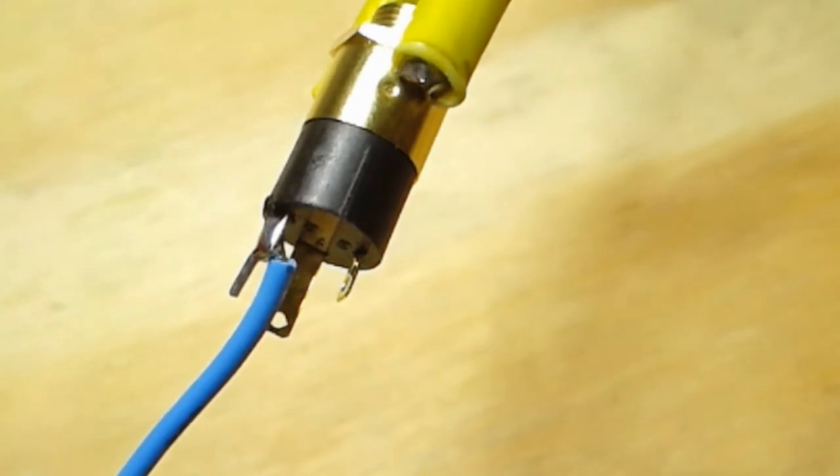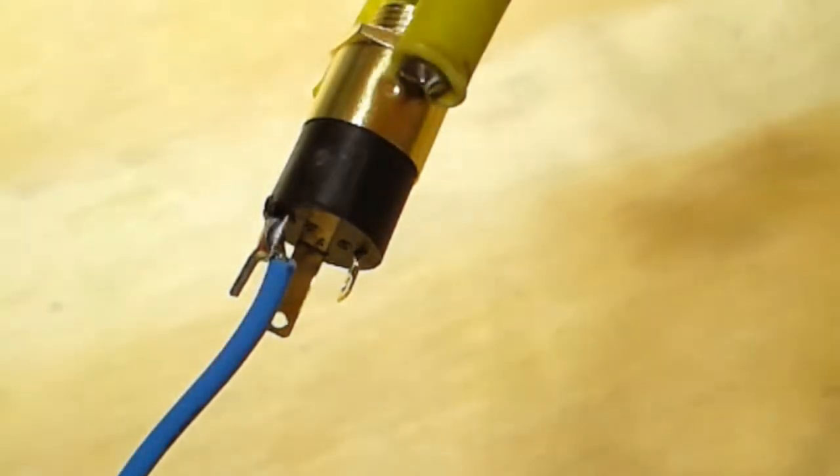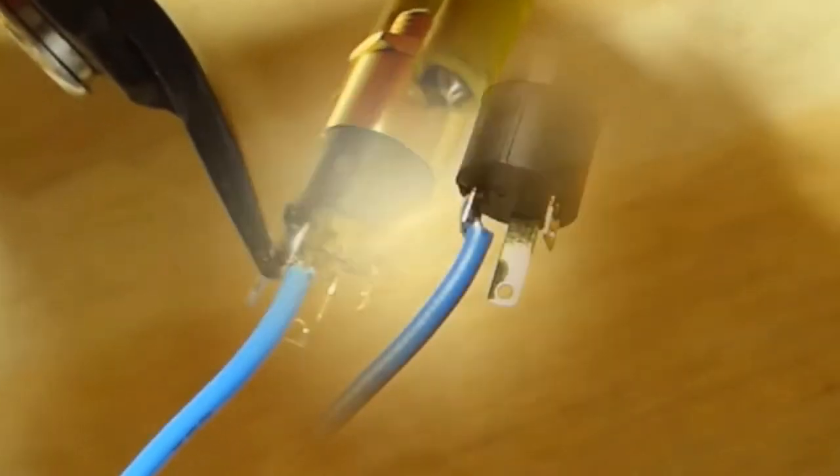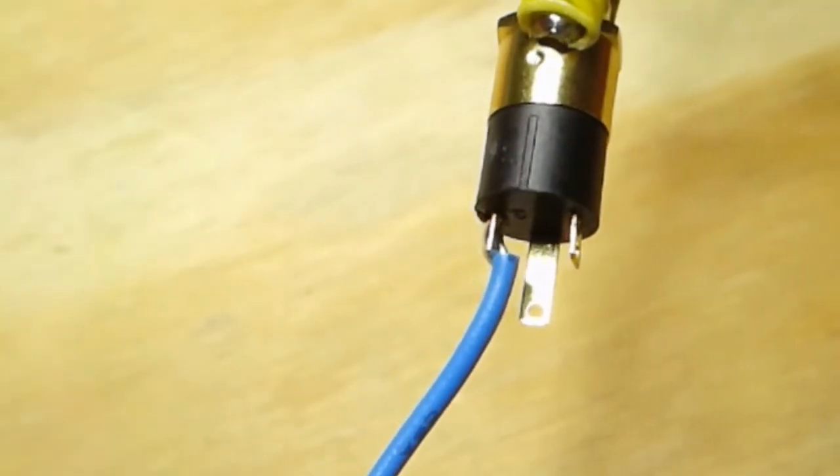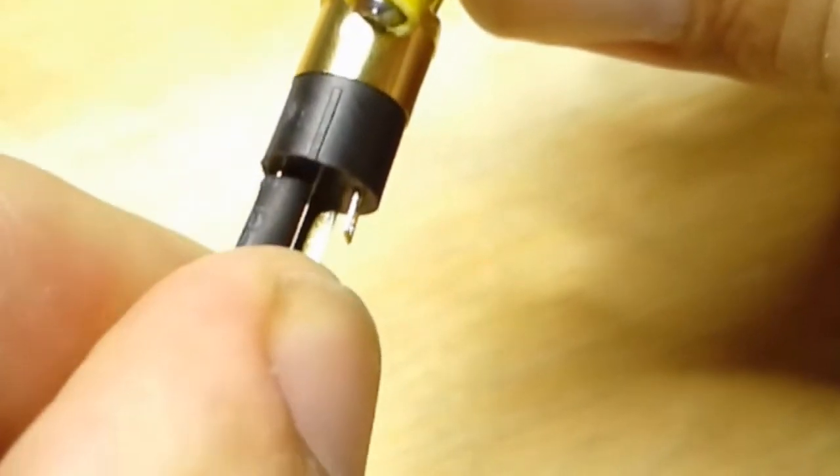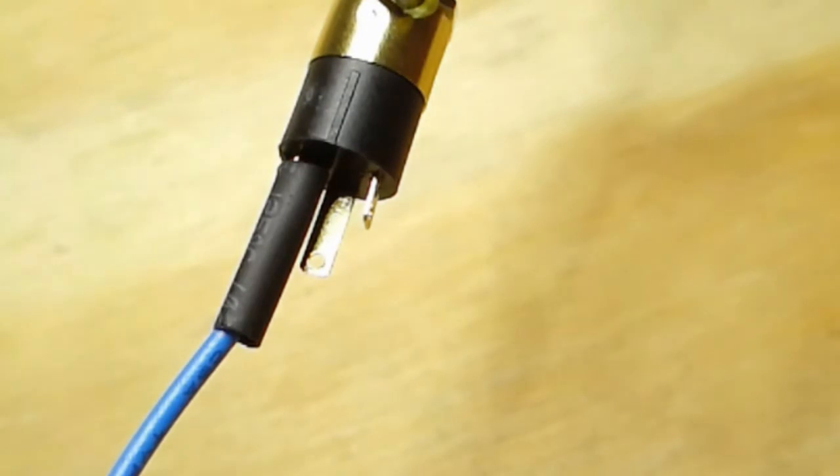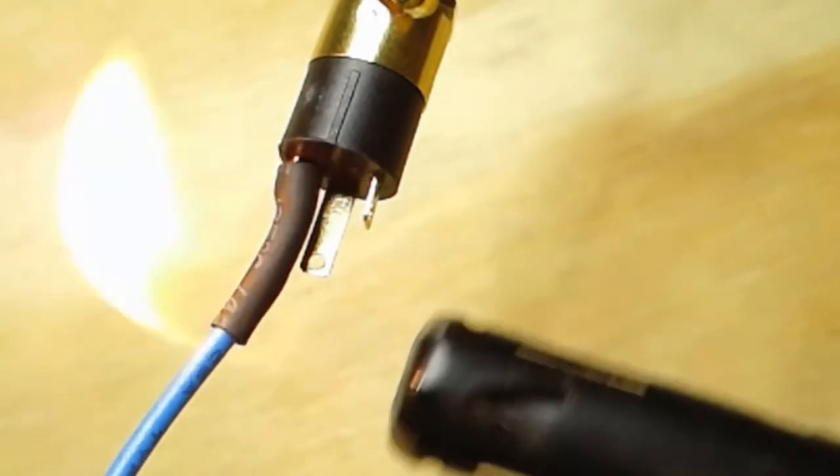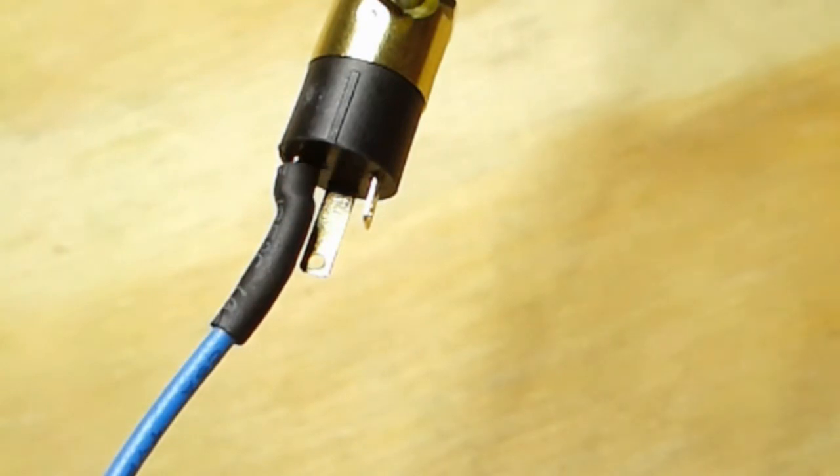At this point, we'll take a pair of flush-cut pliers and trim this off. At this point, we'll slide a small piece of heat shrink tubing over that connection and we'll heat it with a flame. And that one is done.